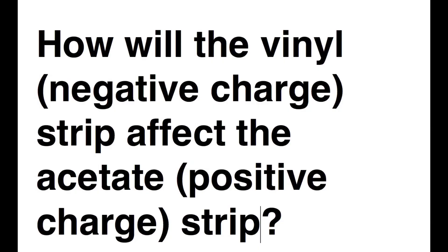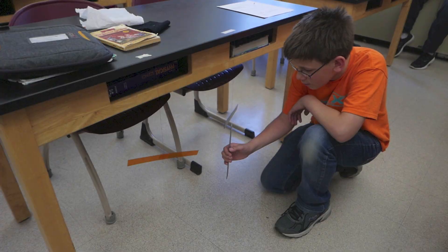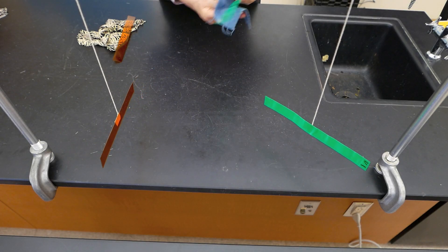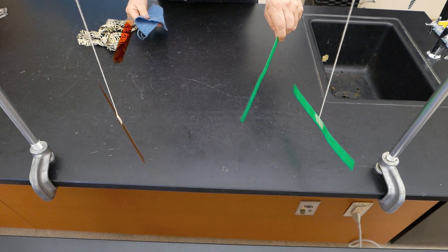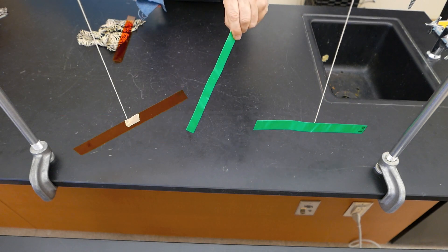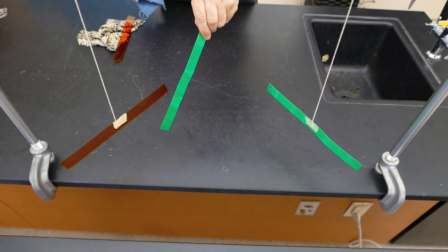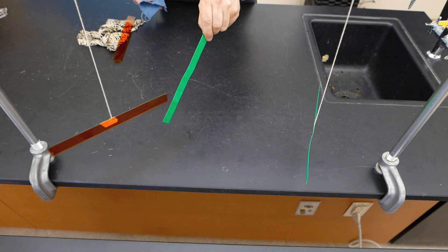So our next test will be what will happen if we bring the negatively charged strip near that positively charged. I rub the vinyl again with the wool and make it negatively charged. We see it's repelling that strip. And when I get it near the acetate, we see that it attracts it.